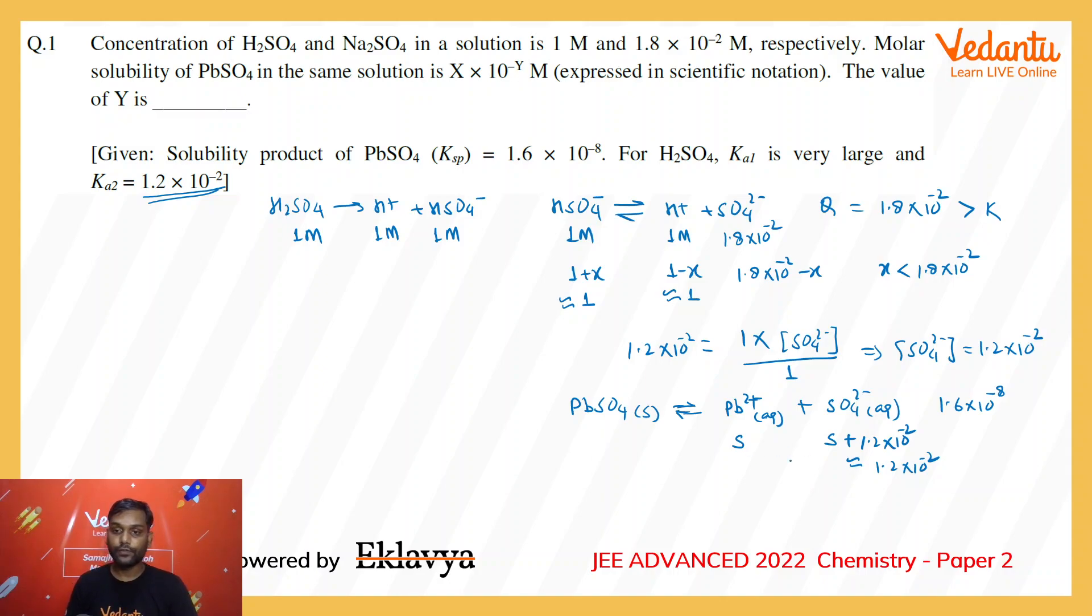Finding S from this, S would be Ksp upon sulfate concentration, that is 1.6 × 10^-8 divided by 1.2 × 10^-2. On simplifying this gives 1.33 × 10^-6.